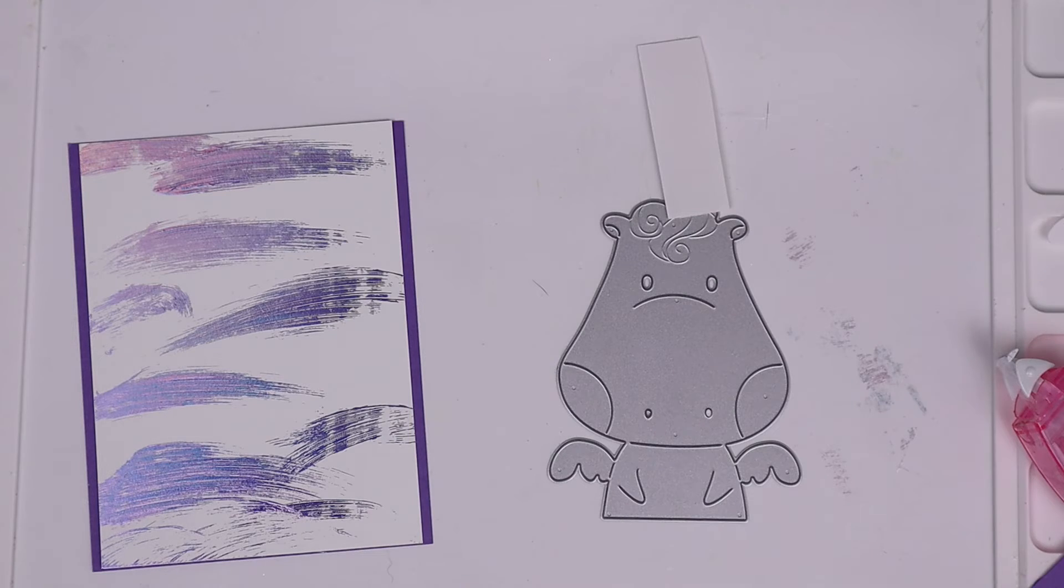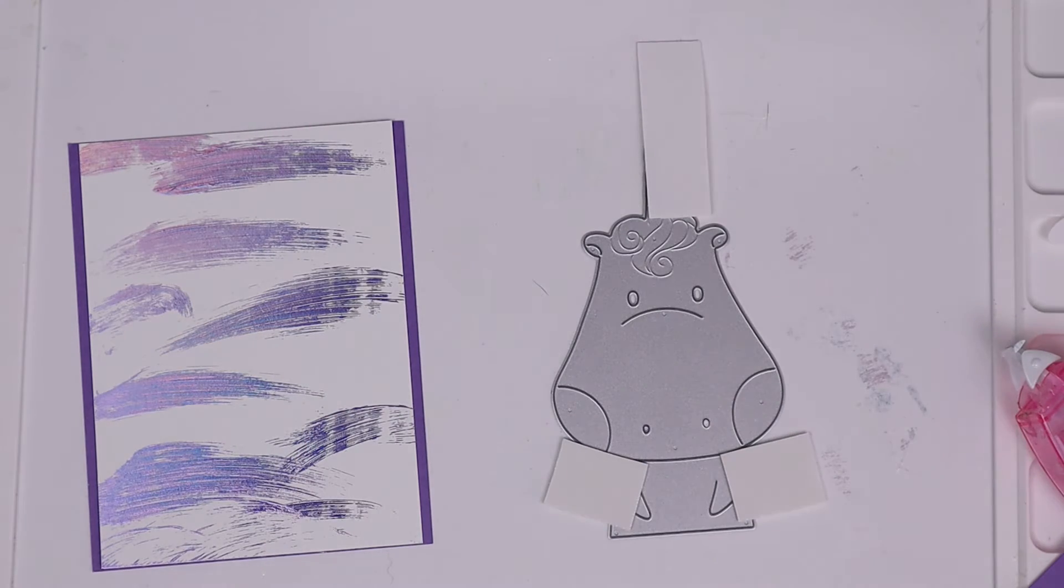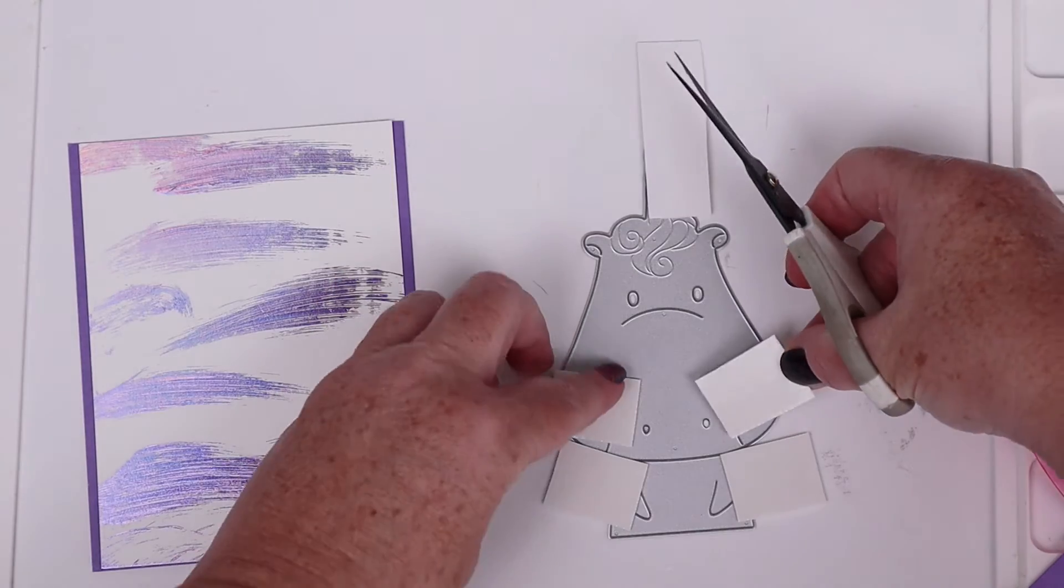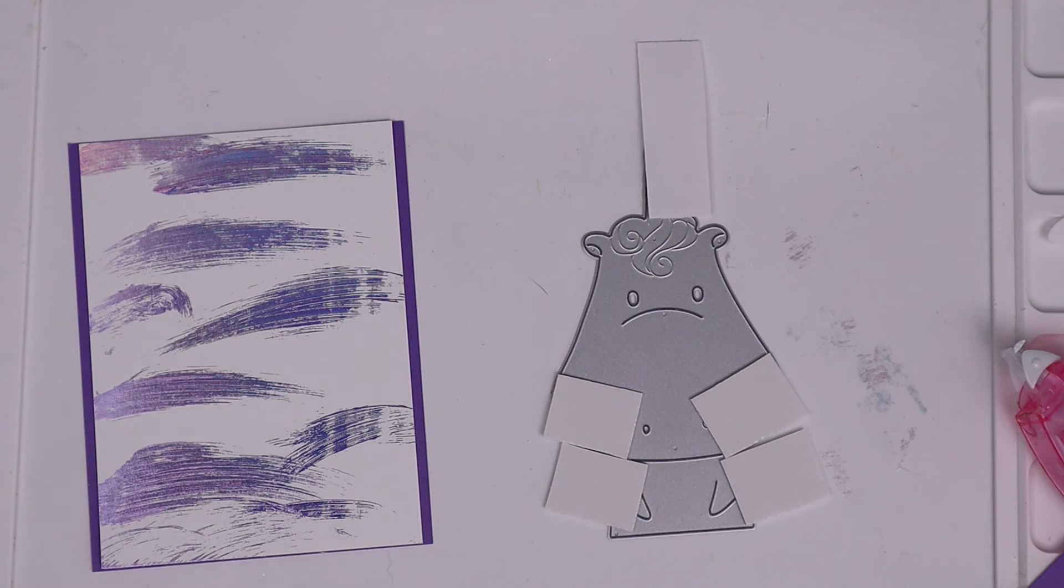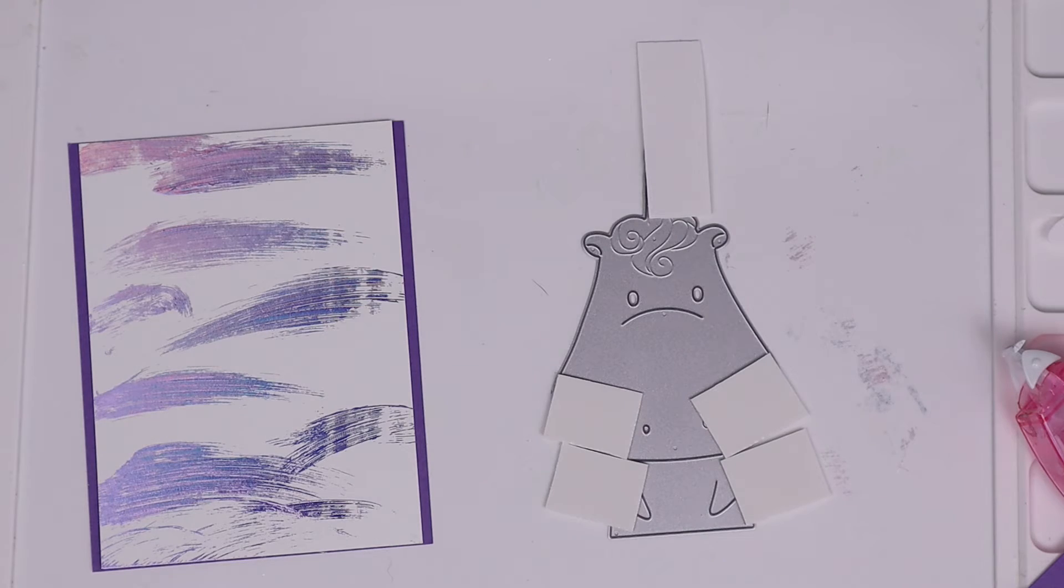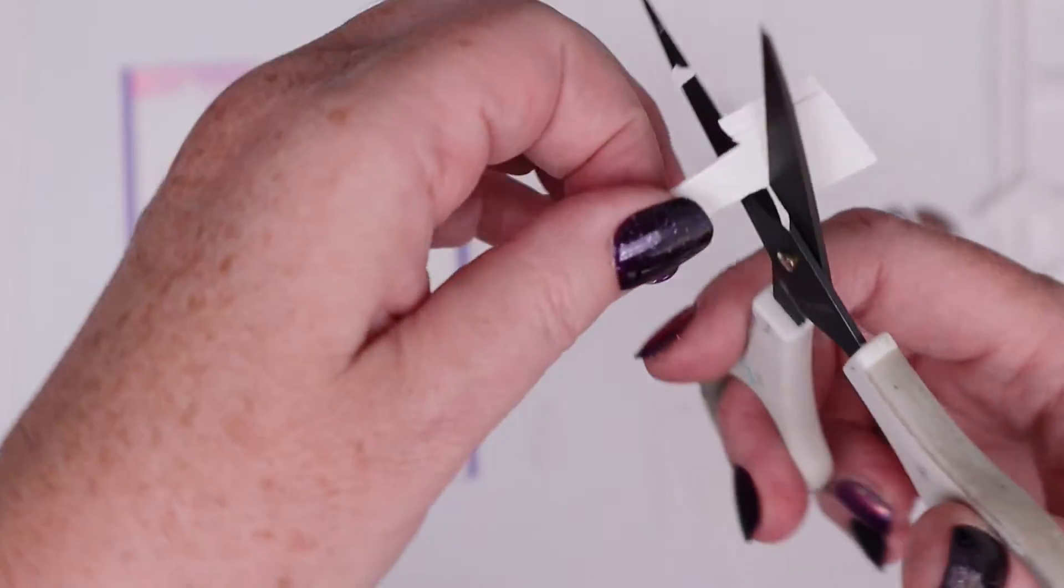I'm using the Waffle Flower Be a Unicorn die and I want some of my unicorn to be foiled. Basically, the unicorn die is one whole piece but it cuts out little separate pieces for the cheeks and the wings. I'm going to put just tiny pieces of the double-sided foam cut with nonstick scissors on top of the areas that I want to foil. This way I don't have to cut an entire unicorn because I'm not foiling her face. I just want to foil those cheeks, the wings, and the horn.